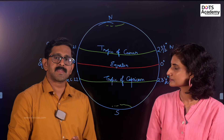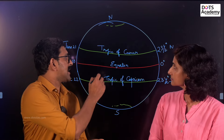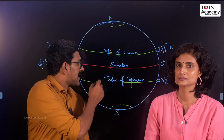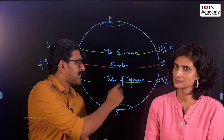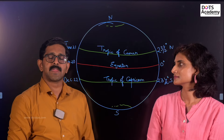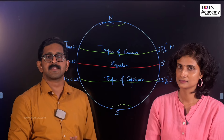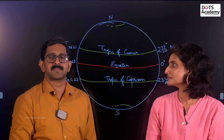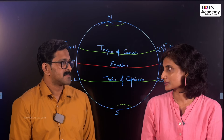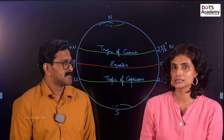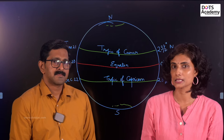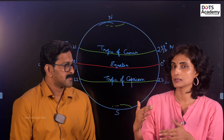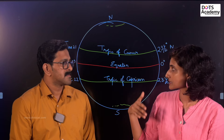That is why it is 23 and a half degrees in the northern hemisphere latitude, and 23 and a half degrees in the southern hemisphere latitude. It is caused by the northern and southern motion of the sun.